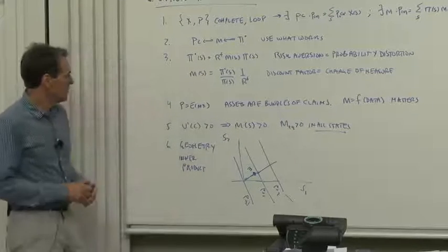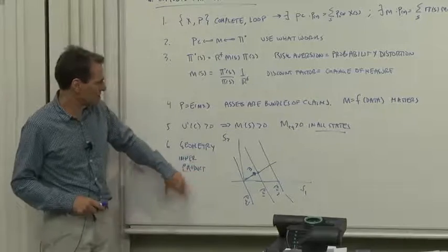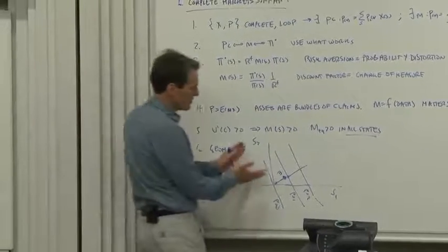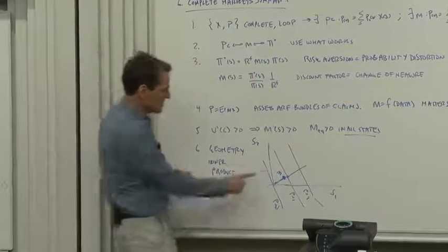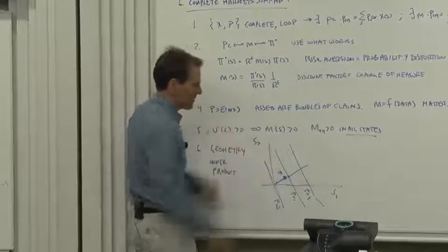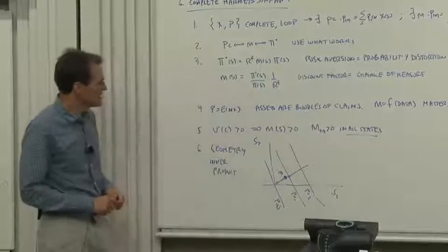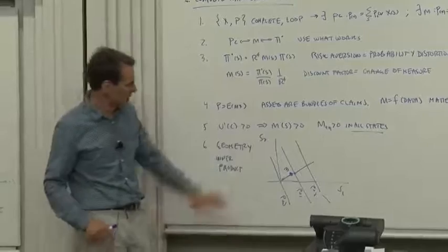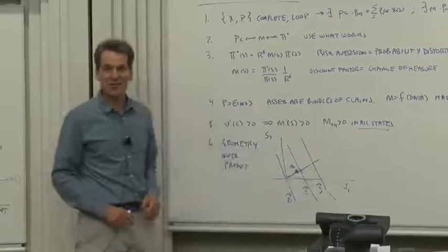And finally, we learned something about the geometry of our asset pricing world. We can put things in this state space diagram, where the discount factor then generates hyperplanes of different prices. And then we can look at all of our different zoo of asset pricing objects in that diagram and keep track of them.